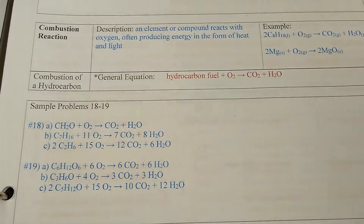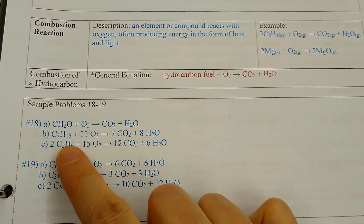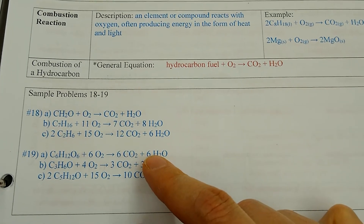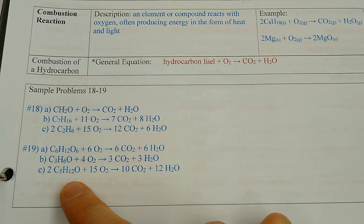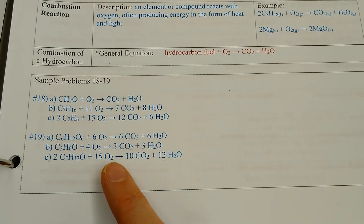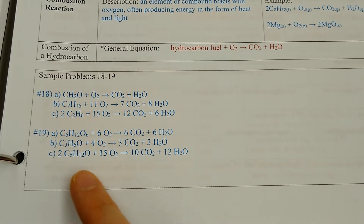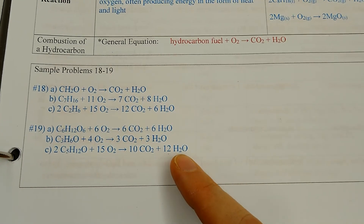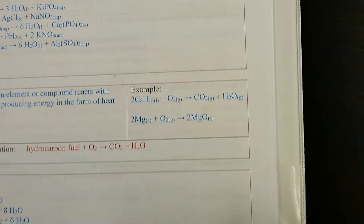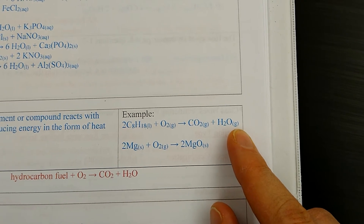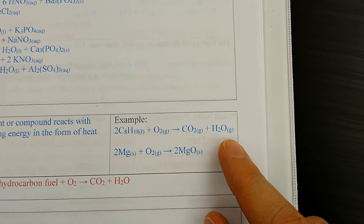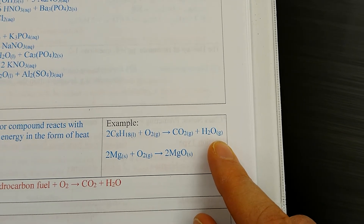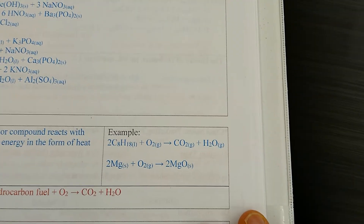Sample problems 18 and 19 work with combustions of hydrocarbons. Problem 18 just gave you the fuel — combine it with oxygen, automatically write CO₂ and water on the other side, then balance. Problem 19 has fuels with some oxygens included but the process is the same. Three of the four substances in a combustion are always the same: oxygen before the arrow, and carbon dioxide and water after. Note the G for gas on the water — combustion is a high-temperature reaction, so water comes out as a gas, not a liquid. When you see H₂O(g) at the end of a combustion reaction, that is correct.